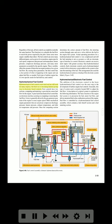Hydromechanical fuel controls were used and are still used on many engines, but their use is becoming limited, giving way to electronic-based controls. Fuel controls have two sections — computing and metering — to provide the correct fuel flow. A pure hydromechanical fuel control has no electronic interface and is generally driven by the gas generator gear train to sense engine speed. Other mechanical parameters sensed include compressor discharge pressure, burner pressure, exhaust temperature, and inlet air temperature and pressure. The metering section delivers fuel through cams and servo valves, though fuel metering is not as accurate as with an electronic control.